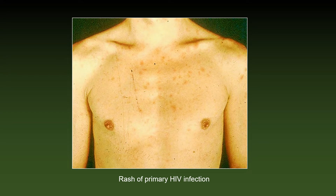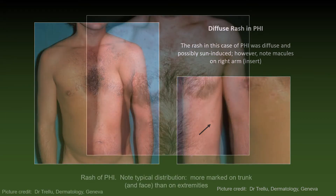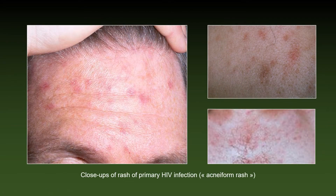Another photograph of the rash of primary HIV infection. In this case of PHI, the rash was diffuse and possibly sun-induced; however, note the macules on the right arm. The typical distribution is more marked on trunk and face than on extremities. Three close-up photographs of the rash of primary HIV infection are also shown.